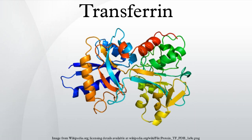Each transferrin molecule has the ability to carry two iron ions in the ferric form. The gene coding for transferrin in humans is located in chromosome band 3Q21.